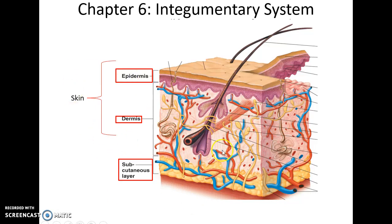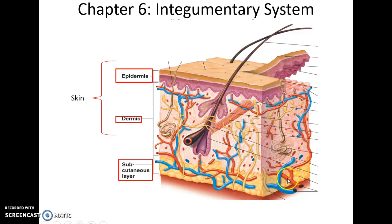Here is a cartoon image of the integumentary system where we have the skin, which consists of the superficial epidermis. Below that is the dermis, where many accessory structures are embedded, and then deep to that is the subcutaneous layer.